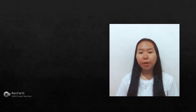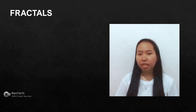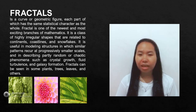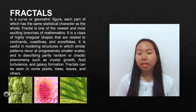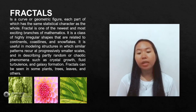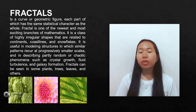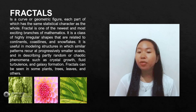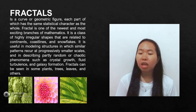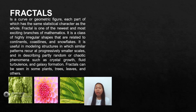The second type of pattern is the fractal — a curve or geometric figure where each part has the same statistical character as the whole. Fractals are one of the newest and most exciting branches of mathematics, representing a class of highly irregular shapes related to continents, coastlines, and snowflakes. They are useful in modeling structures where similar patterns recur at progressively smaller scales, and in describing partly random or chaotic phenomena such as crystal growth, fluid turbulence, and galaxy formation. When zooming in on a portion of a fractal, smaller copies of the overall shape appear, repeating infinitely.